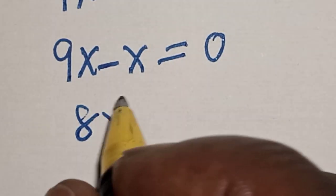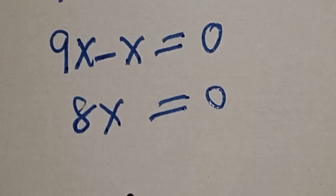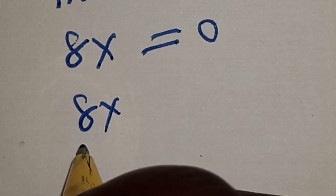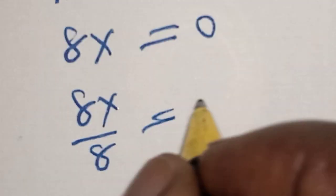And let's divide both sides by 8. 8x divided by 8 is equal to 0 divided by 8.